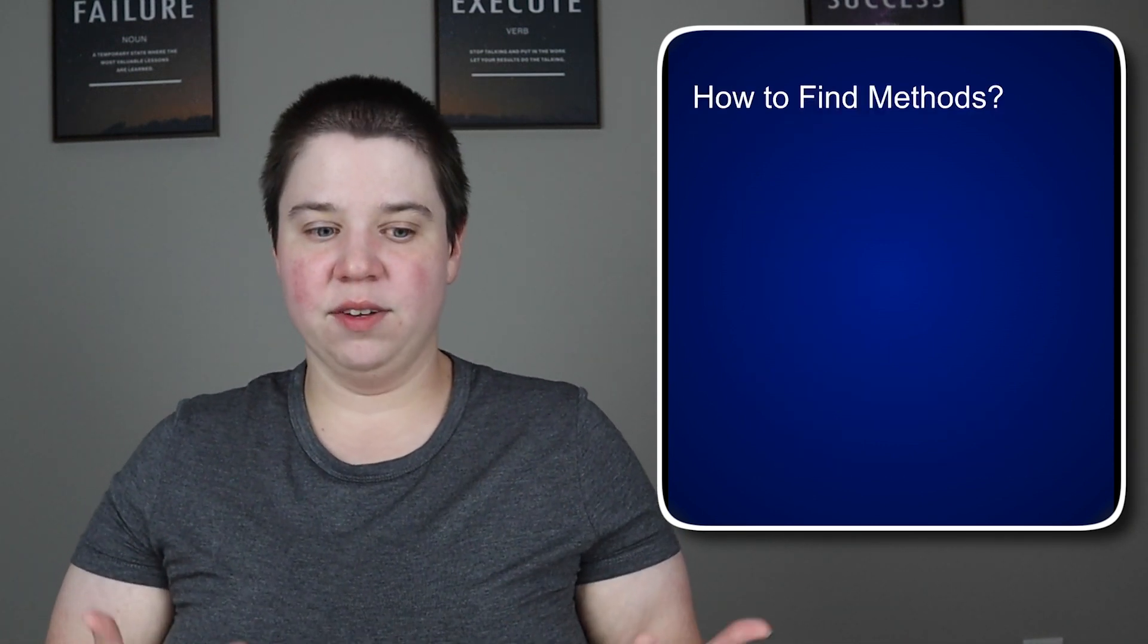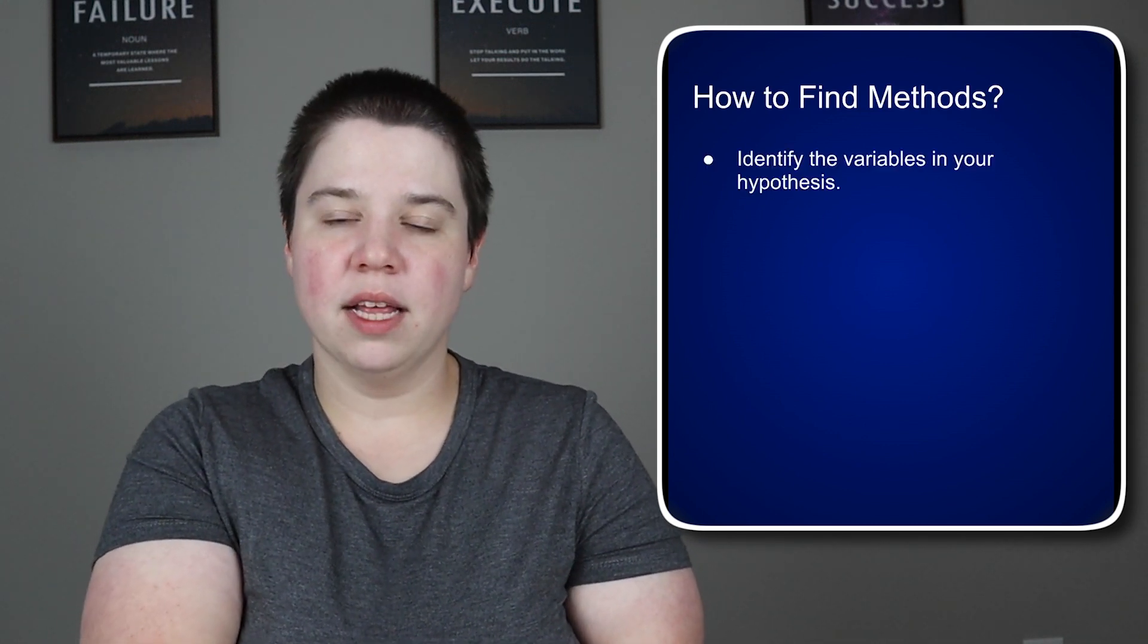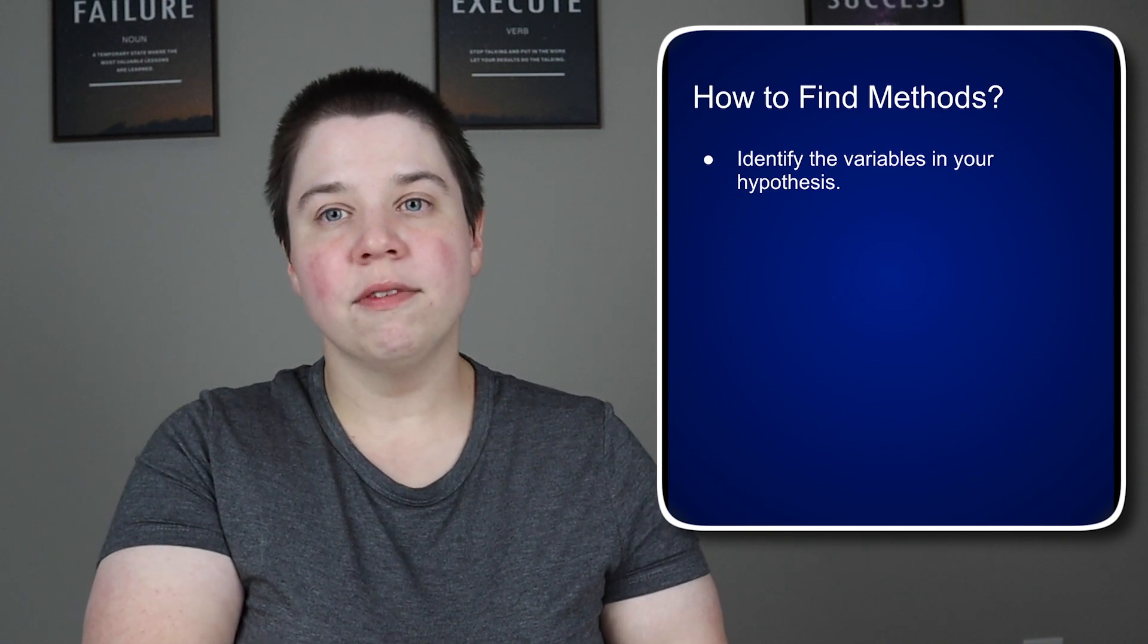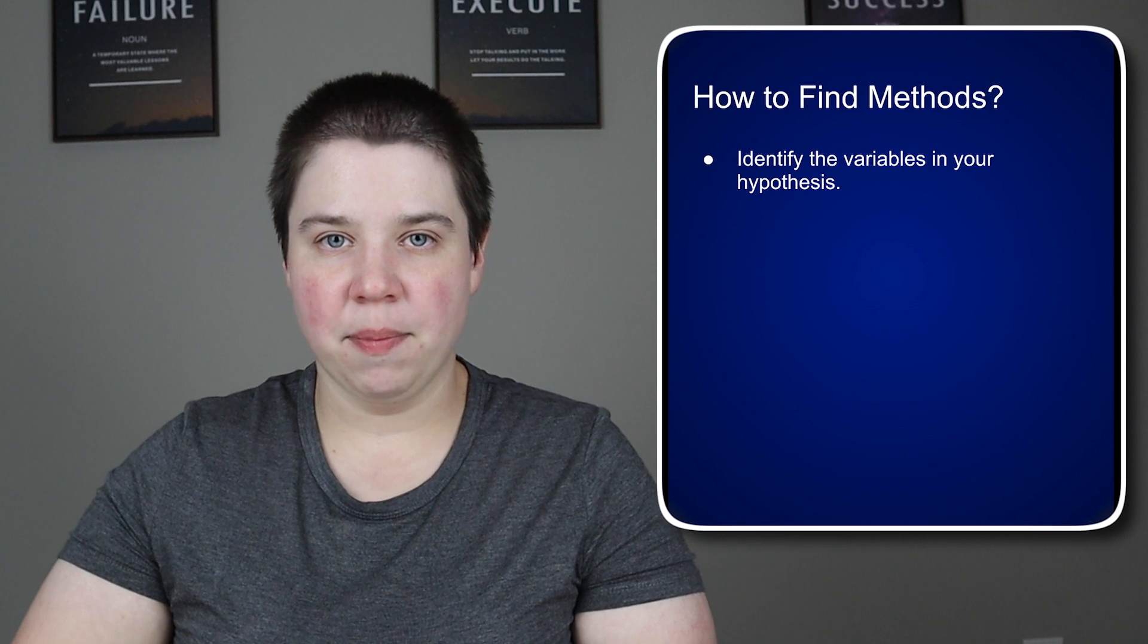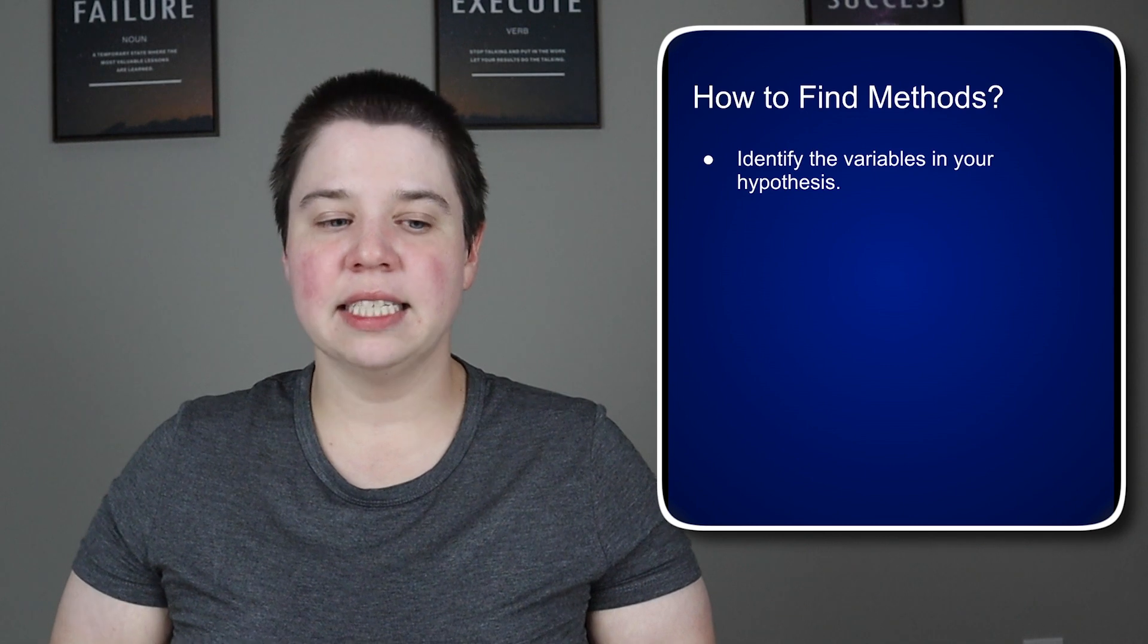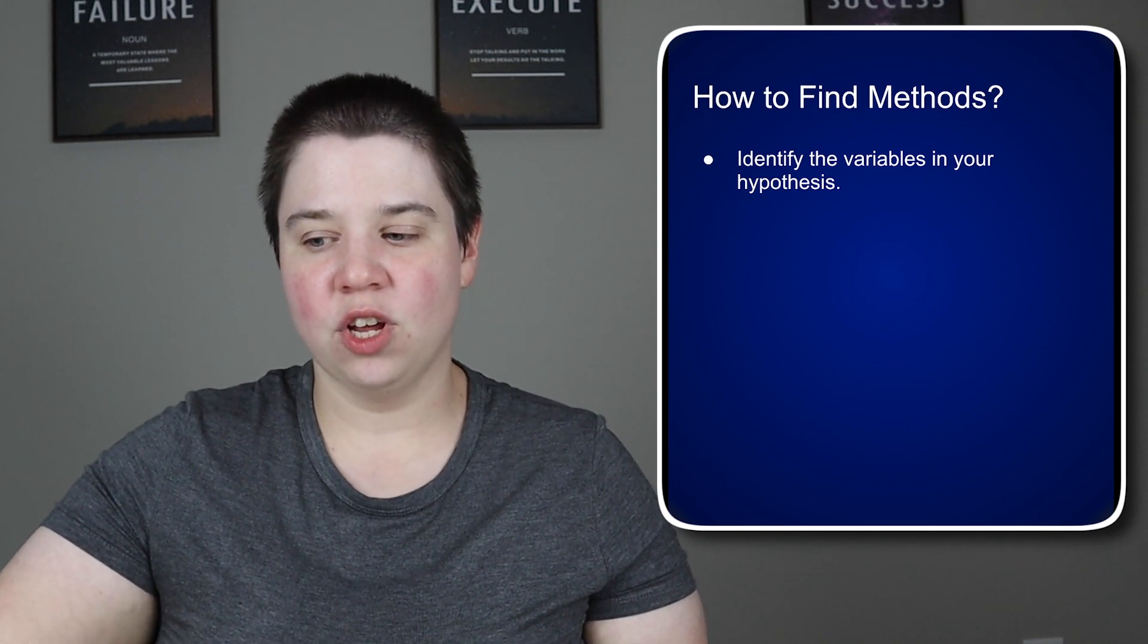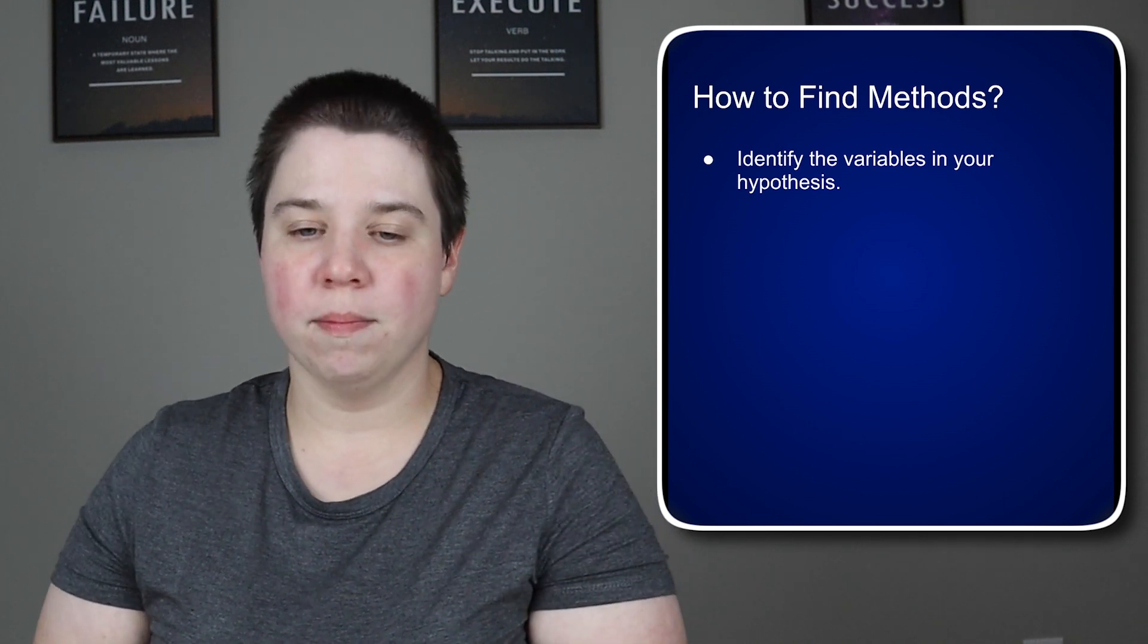So then how do we find methods? If we know what we're looking for how do we actually find them? The first thing you want to do is look at your hypothesis or your research question and identify the variables within it. Let's say I had a hypothesis and my hypothesis was that peripheral heart action circuit training can increase muscle hypertrophy and reduce feelings of fatigue. Let's say it's something like that. So my variables within that I have peripheral heart action circuit training and then I have on the other side muscle hypertrophy and then also reduce feelings of fatigue. So those are my different variables that I would want to either implement or measure.